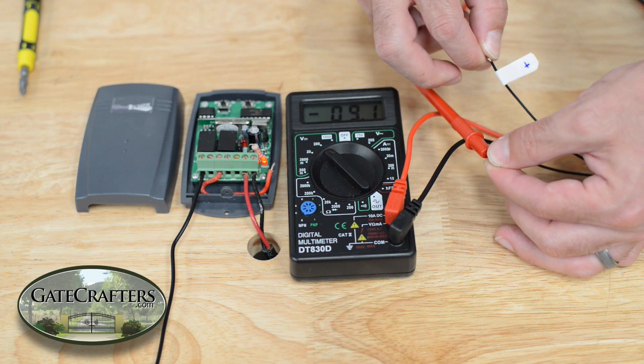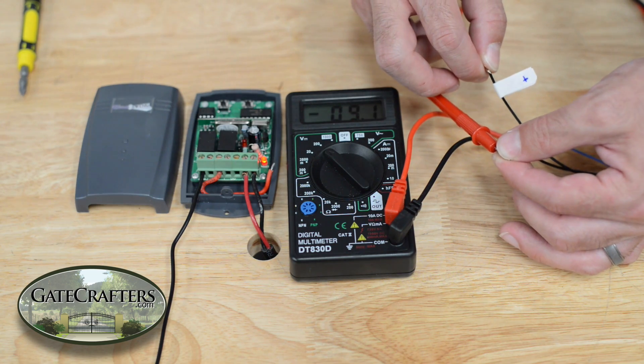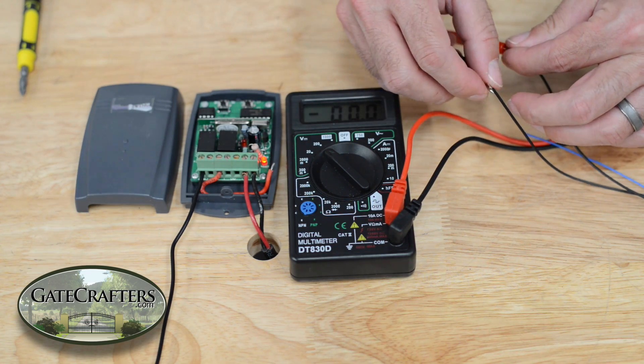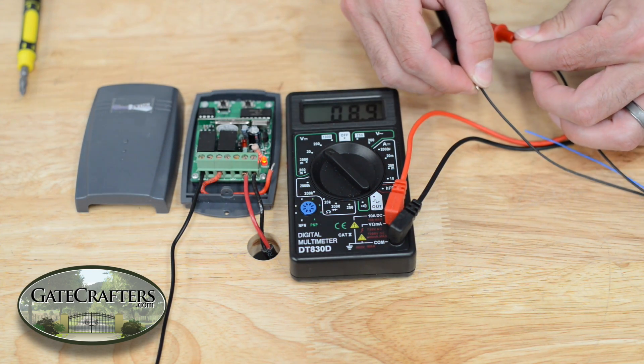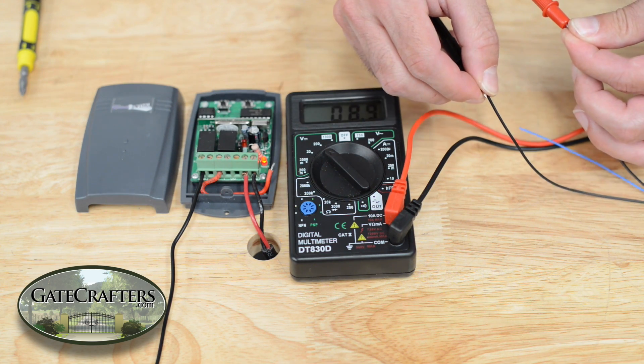So because we have it on backwards and it's showing a negative, we know it's backwards. So then I know the red one needs to be moved over to this to show positive, and then I will know which way my transmitter module needs to be wired in, this one positive, this one negative.